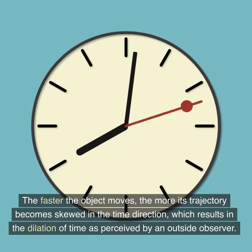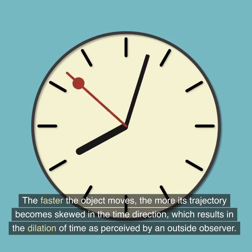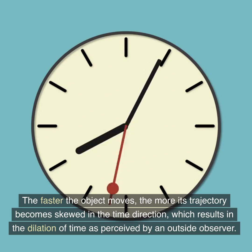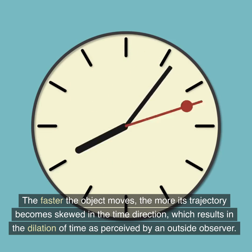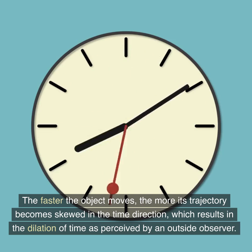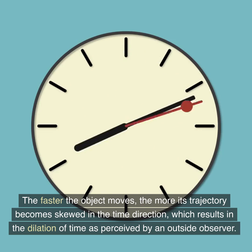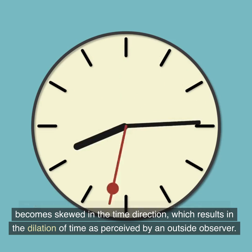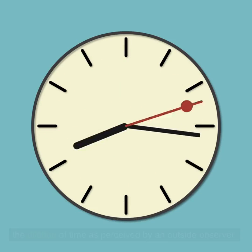The faster the object moves, the more its trajectory becomes skewed in the time direction, which results in the dilation of time as perceived by an outside observer.